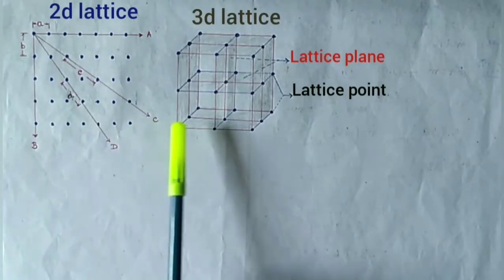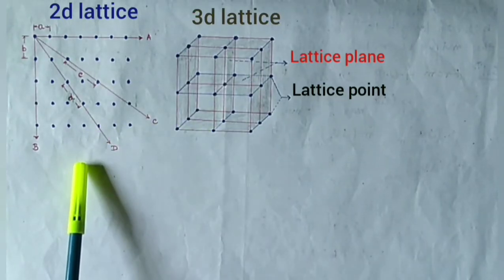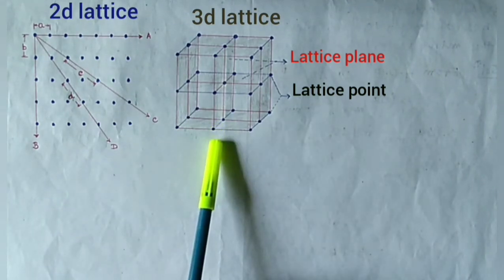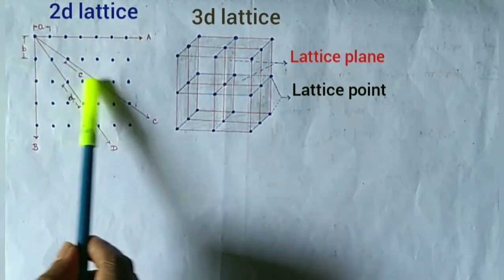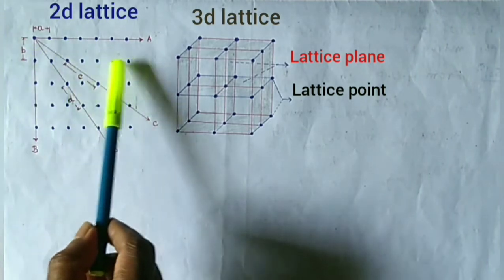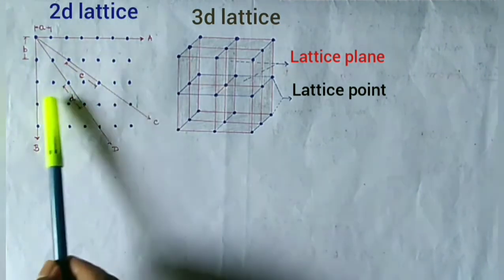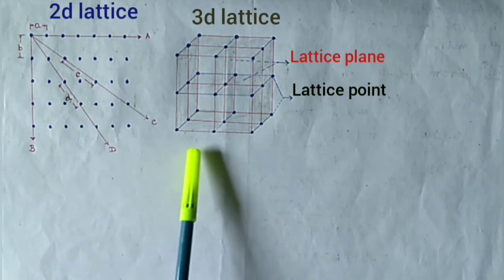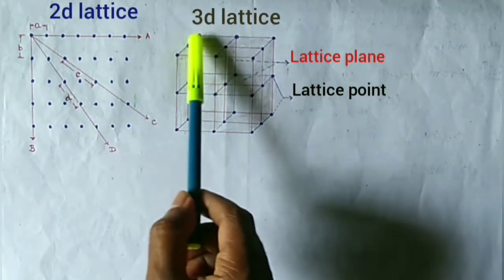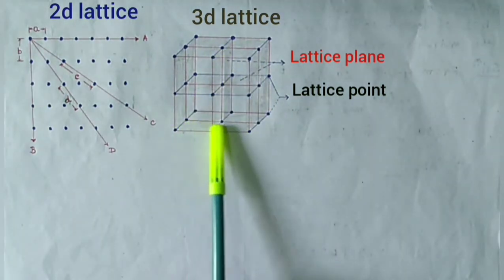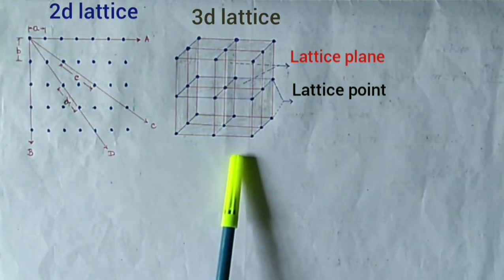Let's elaborate. Look at the diagrams. This diagram represents the two-dimensional lattice and this diagram represents the three-dimensional lattice. These points are the lattice points. All these points are arranged along parallel lines for the two-dimensional lattice, and the points are arranged in parallel planes as well as along parallel lines in the three-dimensional lattice.